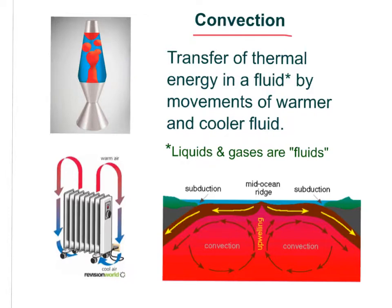The first thing to understand about convection is density. Density is the mass of a material divided by its volume. If we have a liquid or a gas and we heat it up, that process is going to decrease its density, because its mass will not change but its volume certainly can. As we heat it up, it becomes less dense, and that affects convection.